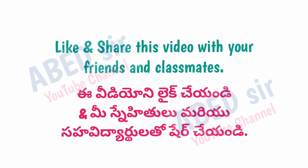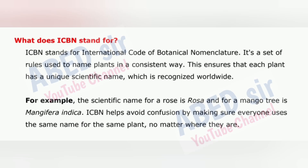Next important question: What does ICBN stand for? ICBN stands for International Code of Botanical Nomenclature. It's a set of rules used to name plants in a consistent way. This ensures that each plant has a unique scientific name recognized worldwide. For example, the scientific name for a rose is Rosa and for a mango tree is Mangifera indica. ICBN helps avoid confusion by making sure everyone uses the same name for the same plant, no matter where they are.